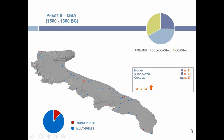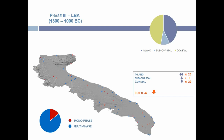This is the schema for the first phase. During the second phase, we see a change in the number of sites and an increase in sub-coastal occupations, along with a reduction of monophase sites. During the third phase, we have a strong change in sub-coastal occupation: a differentiation of coastal and inland occupation, a reduction of sub-coastal sites, and an augmentation of monophase sites.